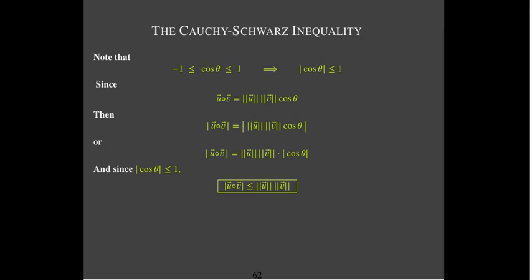When would we get equality? We would get equality when cosine of theta equals 1. So we would be able to say that the absolute value of u dotted with v equals the length of u times the length of v only when theta equals 0 or theta equals pi.